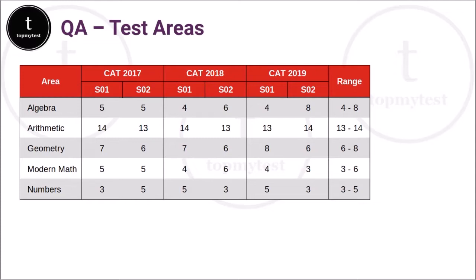Arithmetic contains roughly about 40% of your CAT paper. If you add algebra and geometry together, that's another 40 to 45%. So between algebra, arithmetic, and geometry, you have close to 24 to 25 questions out of the 34 questions in the quant section. If you add progressions, indices, surds, and logarithm — progressions are usually clubbed in the modern math section, and numbers usually contain the indices, surds, and logarithm part — adding those gives another three to four questions, bringing you to 29 to 30 questions coverable within these areas.